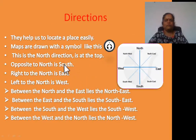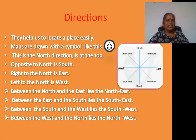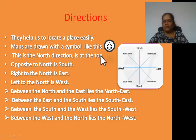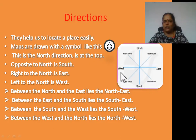Okay students, first one — language of a map: direction. Why do you use direction in a map? They help us to locate a place easily. Maps are drawn with a symbol like this — this is the north direction, and it is at the top. See, children, look at this picture. In this, where is the north direction? Here — it is at the top.